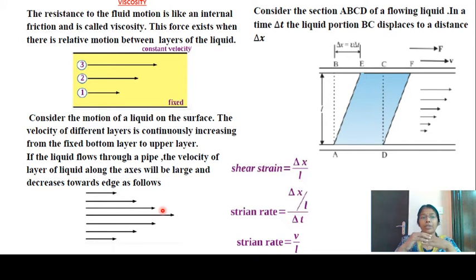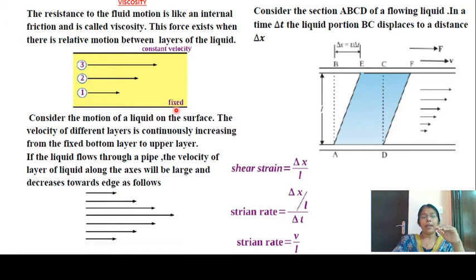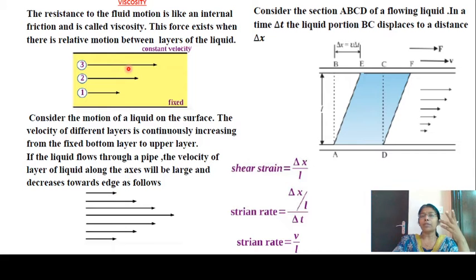Viscosity of a fluid refers to its resistance to fluid motion — it is like an internal friction. There are different layers of fluids in relative motion, and there are different layers experiencing friction. The several layers have varying degrees of friction force between them.